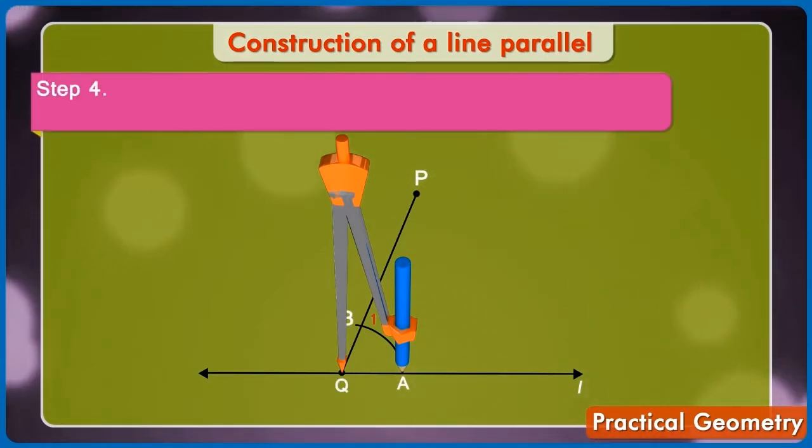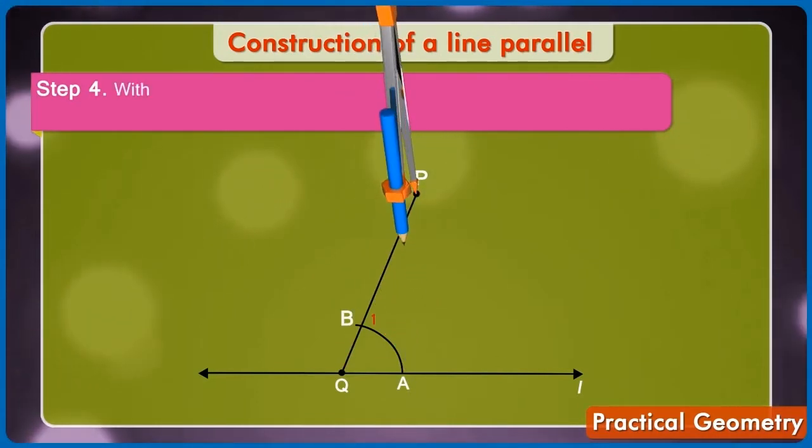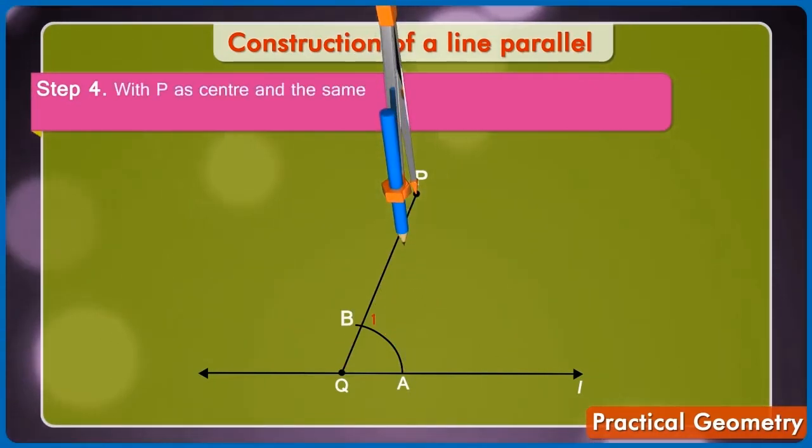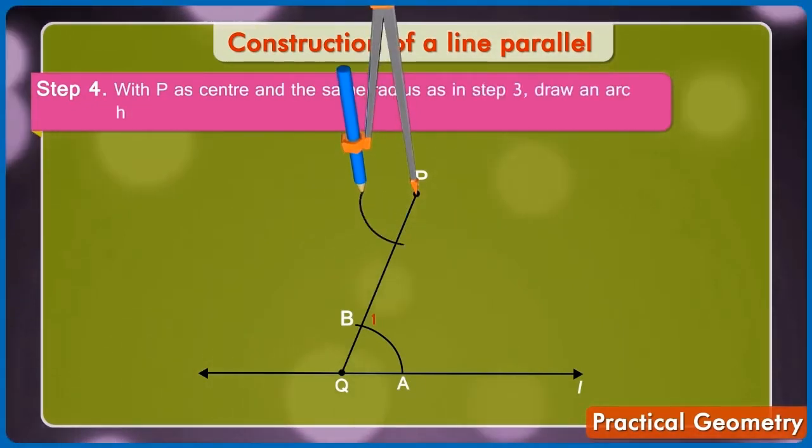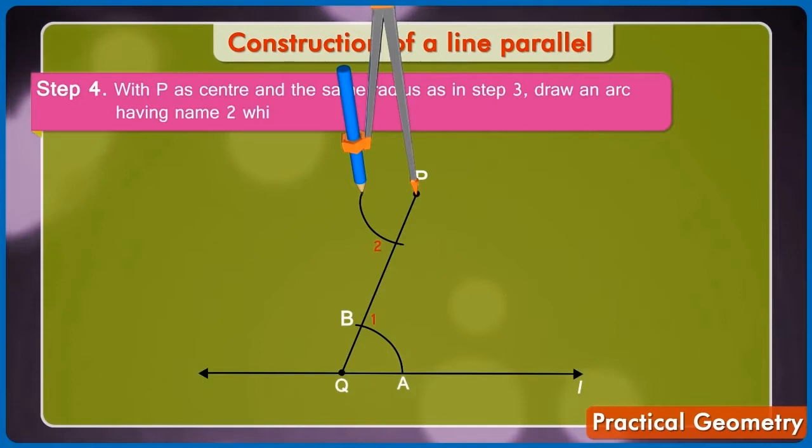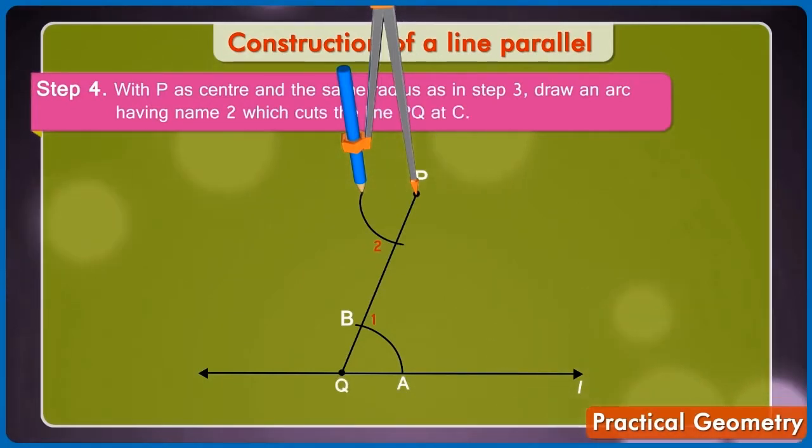Step 4: Now, with P as center and the same radius as in step 3, draw an arc having name 2 which cuts the line PQ at C.